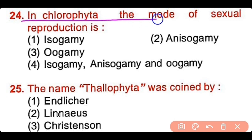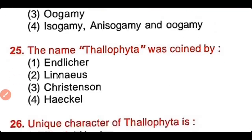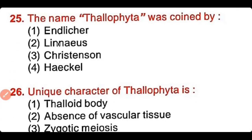Question number 24: In chlorophyta, the mode of sexual reproduction is isogamy, anisogamy, oogamy, or isogamy, anisogamy, and oogamy? The correct answer is option 4. Chlorophyta are green algae; they have isogamy, anisogamy, and oogamy as modes of sexual reproduction.